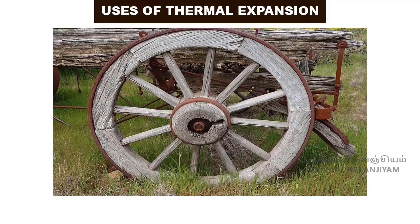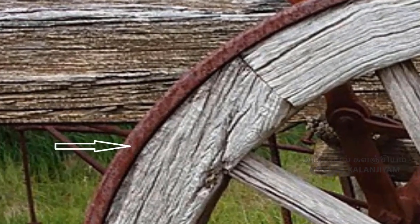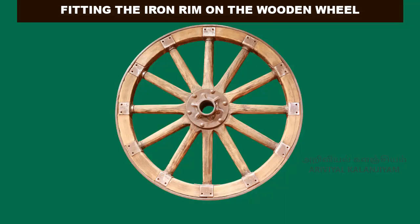Uses of thermal expansion. Fitting the iron rim on the wooden wheel: you would have seen an iron rim on the wooden wheel of a bullock cart. The diameter of the iron ring is slightly less than that of the wooden wheel, so it cannot be easily slipped onto the rim. The iron ring is therefore first heated to a higher temperature so that it expands in size, and the hot ring is then easily slipped over the rim of the wooden wheel. Cold water is then poured on the iron ring so that it contracts and holds the wooden wheel tightly.